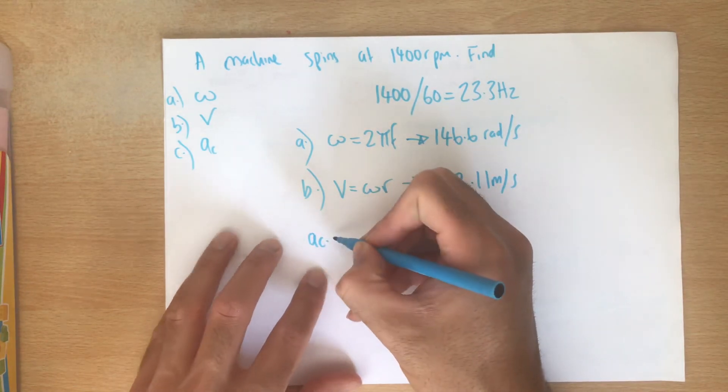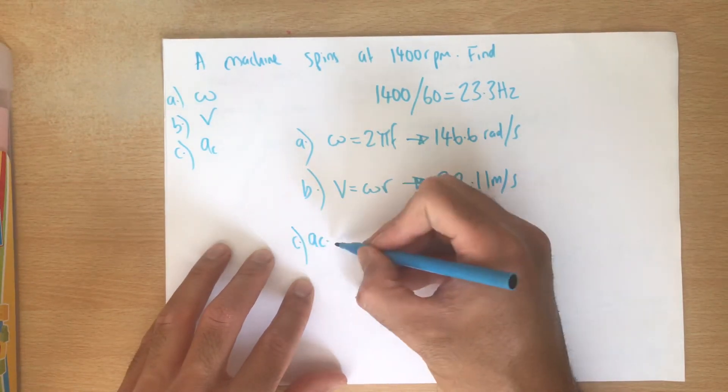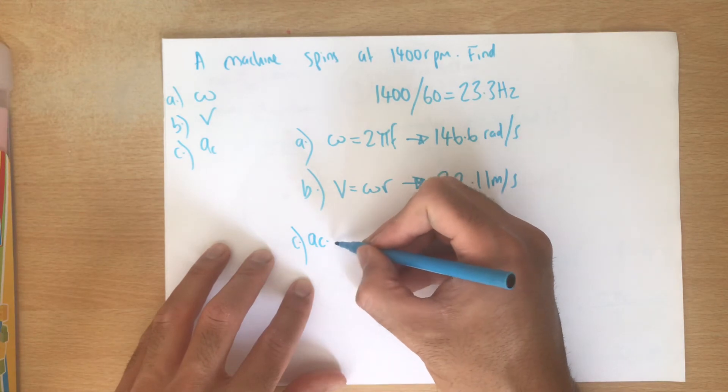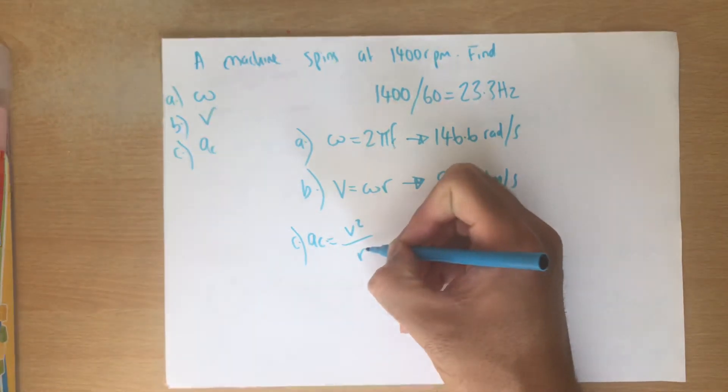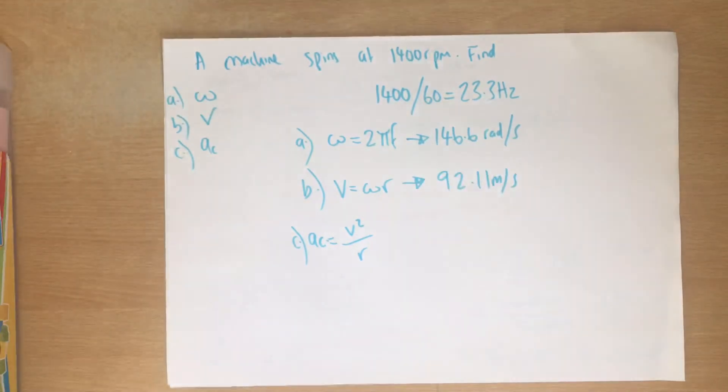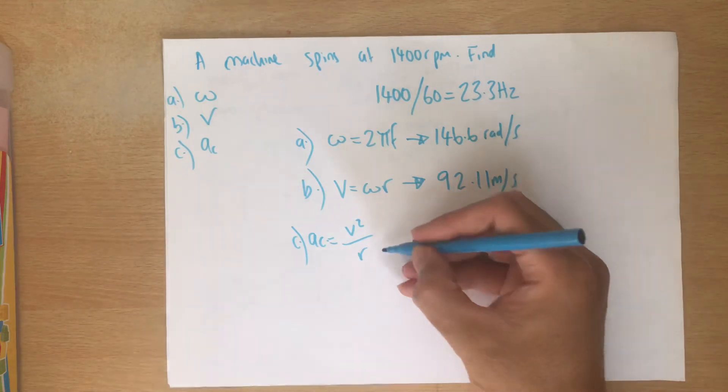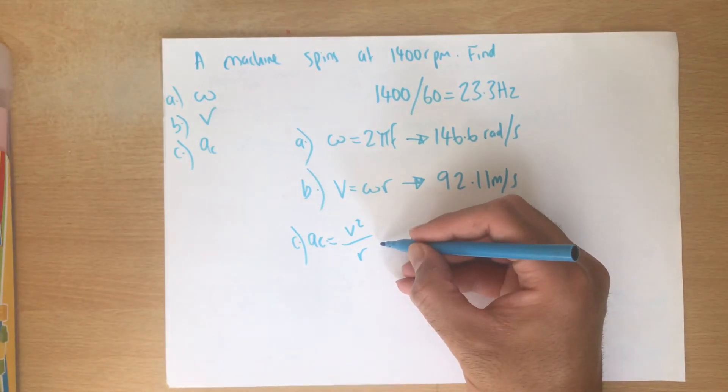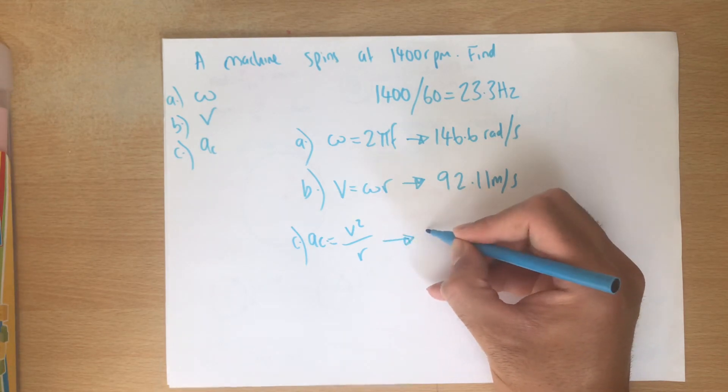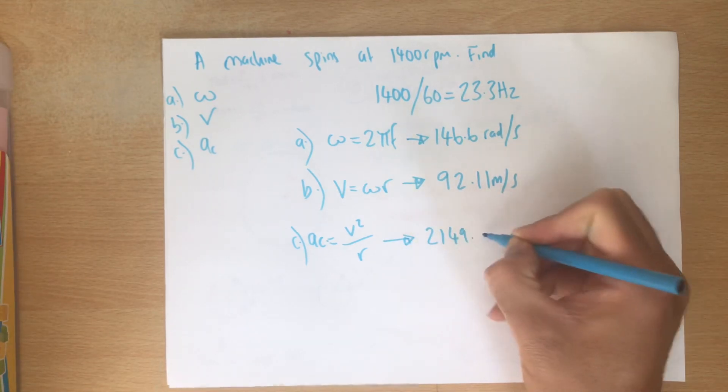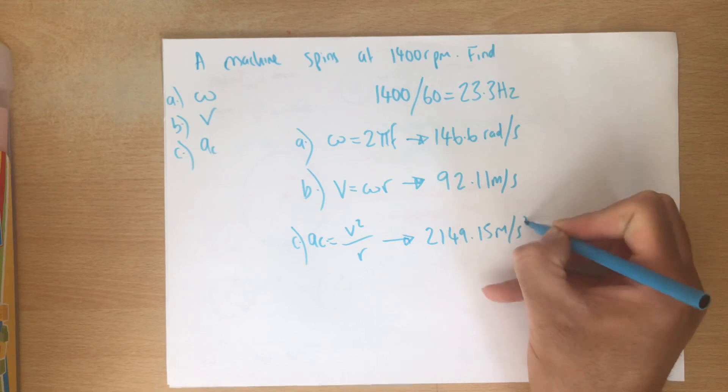And ac, to work out ac, what you do is, this one is v squared over r. It was v squared over r. Or for ac, you could have done omega squared r. So whichever one you want to use. So you just put your numbers in for this one and you get an answer of 2149.15 meters per second squared.